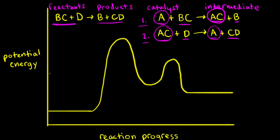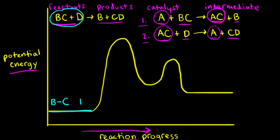Next, let's look at the energy profile for this multi-step reaction. Energy profiles usually have potential energy on the y-axis and reaction progress on the x-axis, so as we move to the right the reaction is occurring. This first line on our energy profile represents the energy level of our reactants, BC and D. Our catalyst A is also present at the very beginning of our reaction.